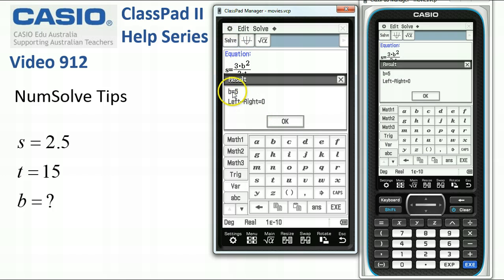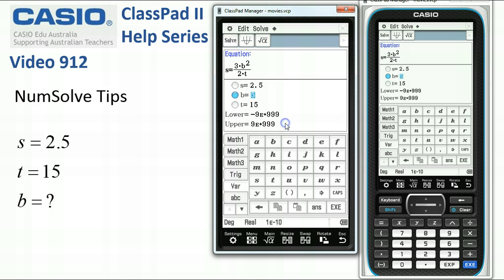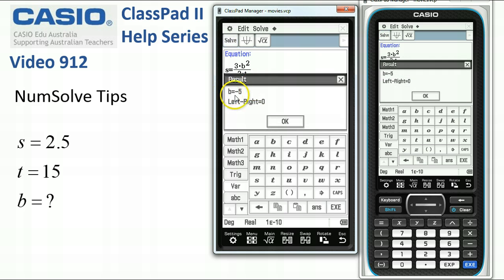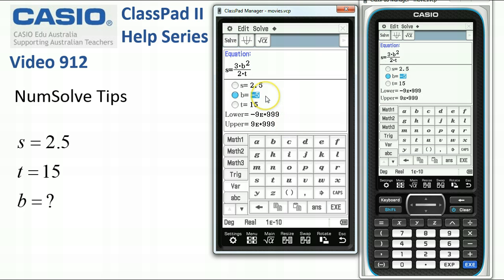We tap solve, and ClassPad comes up with 5 as the first solution here. Now, suppose we thought there was a negative solution as well. If we started off with something like negative 100 here and tap solve, now ClassPad has come up with negative 5 as a possible solution.